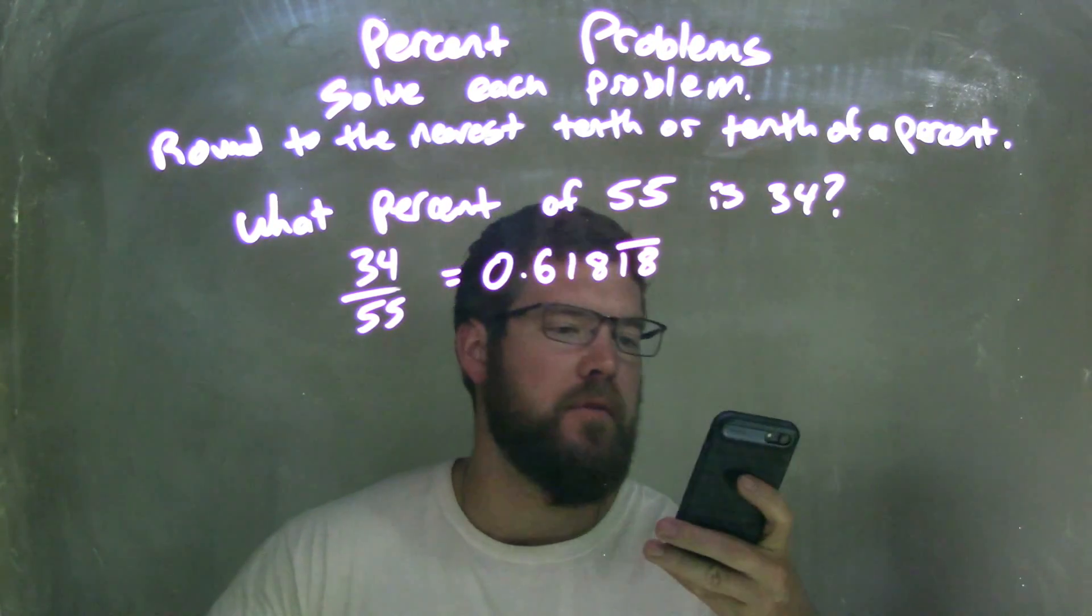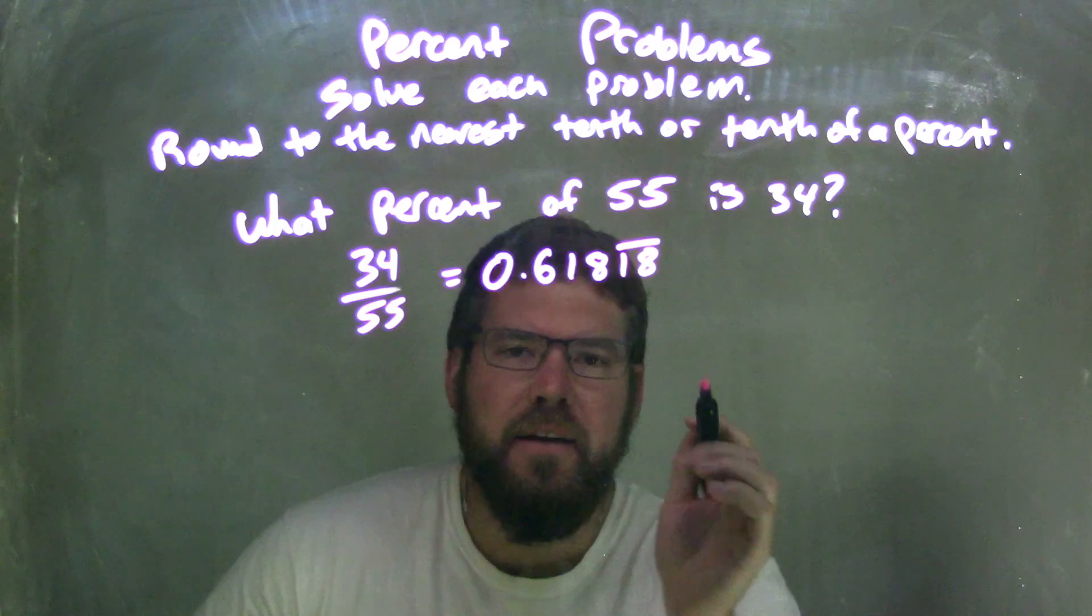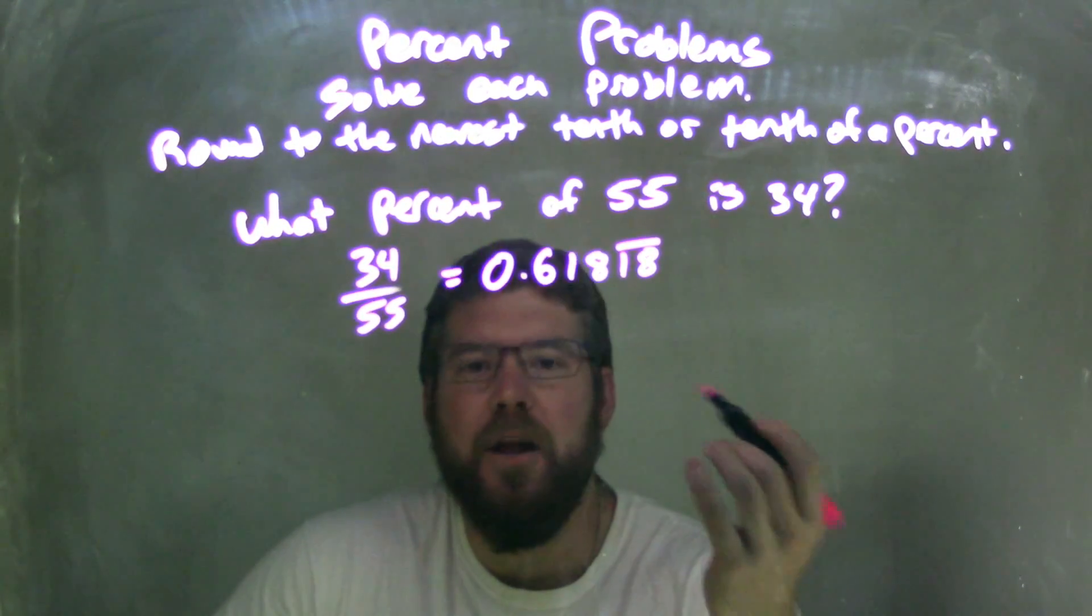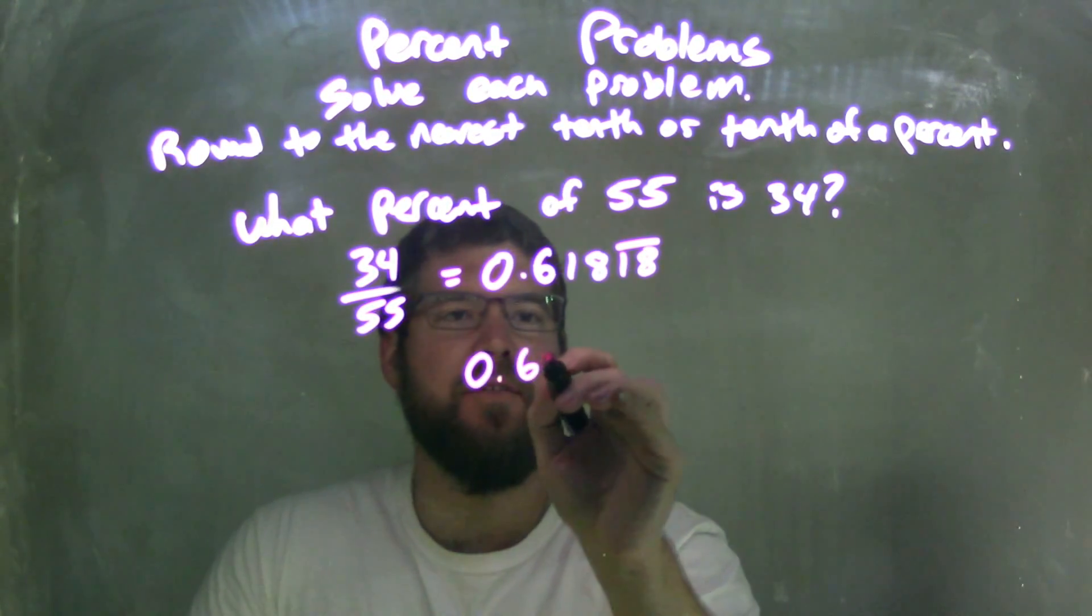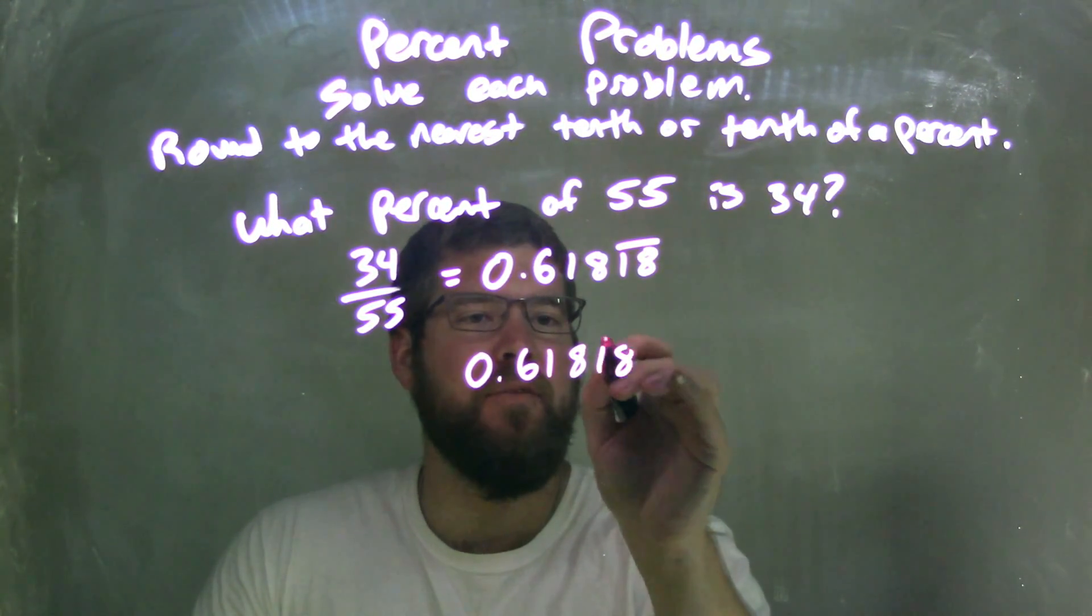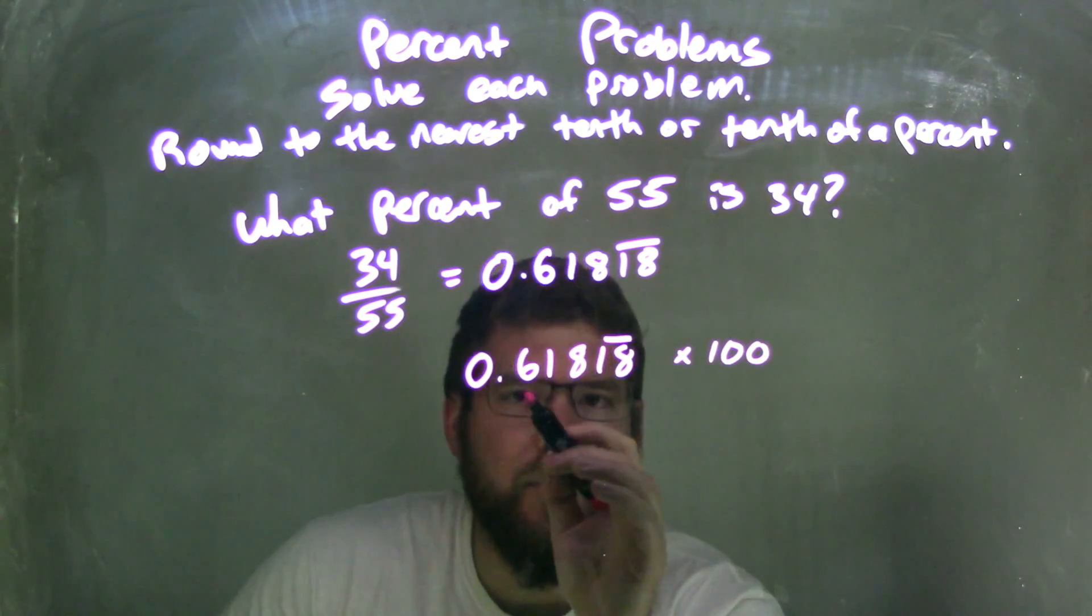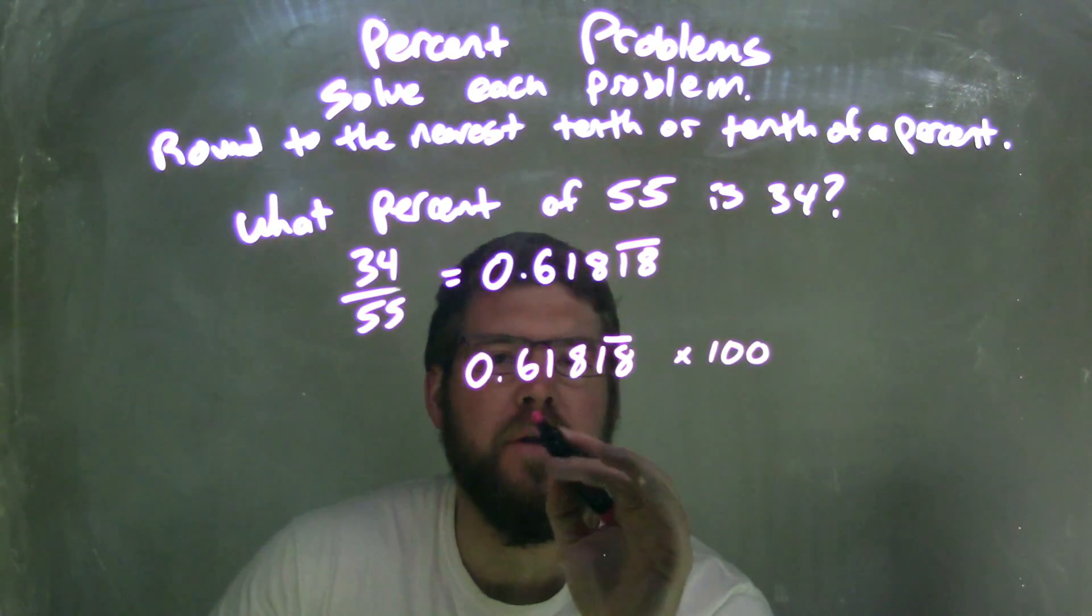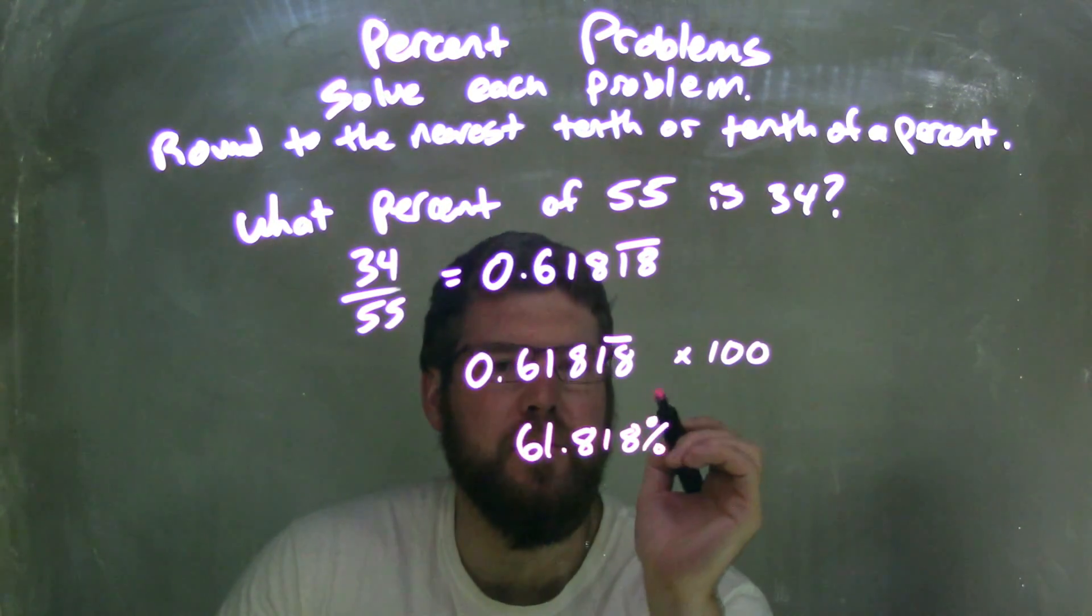So we need to then take that number and convert that to a percent. That's what percent. So I'm going to take the 0.61818 repeating and multiply that by 100. What that leaves me here is we're going to move the decimal over two units, so I have 61.818%.